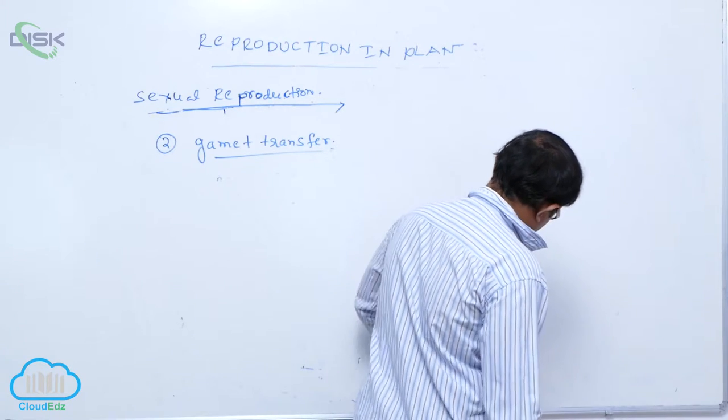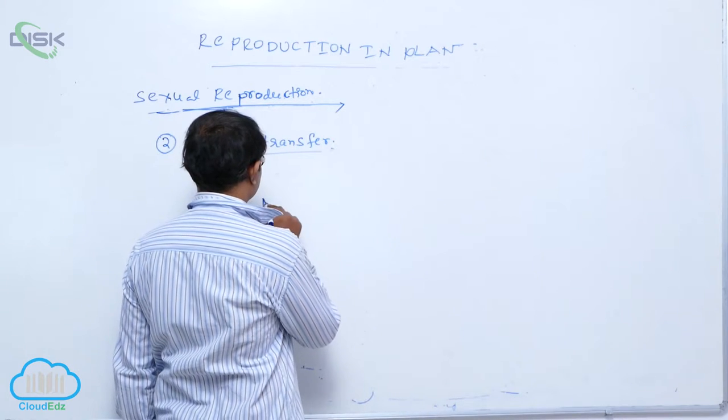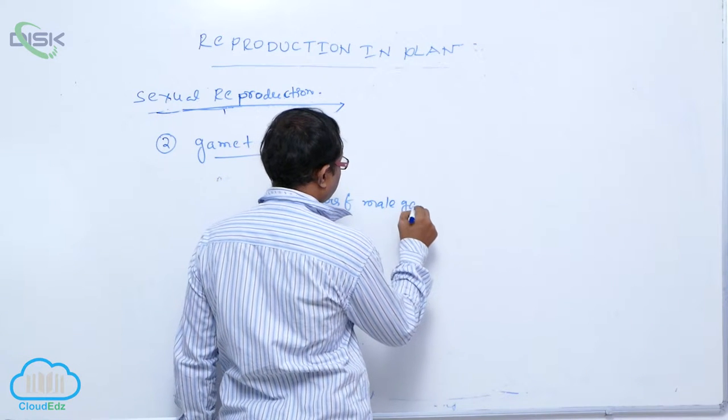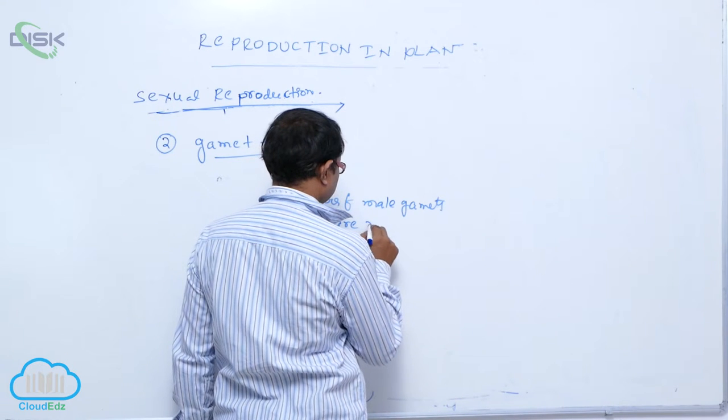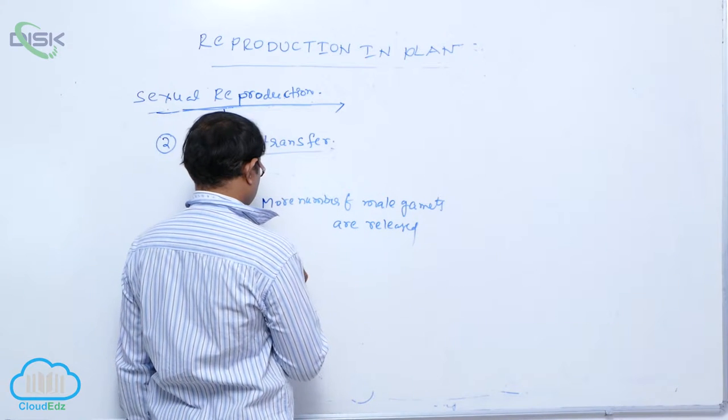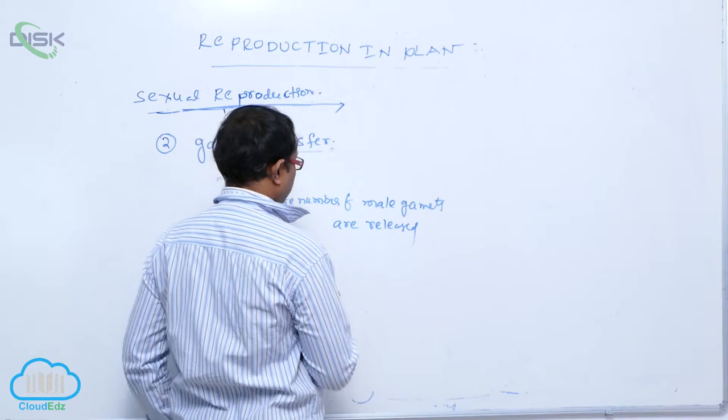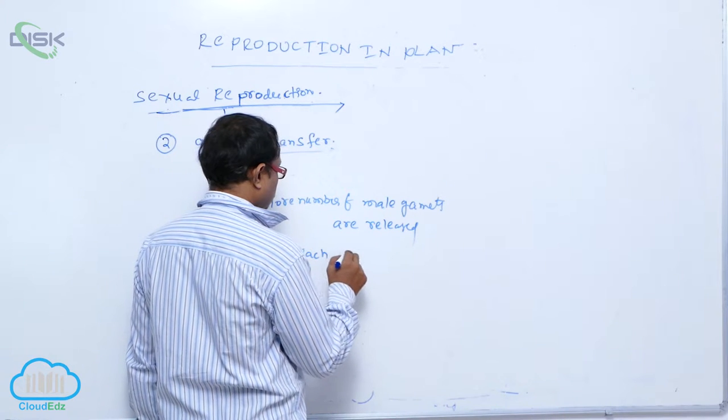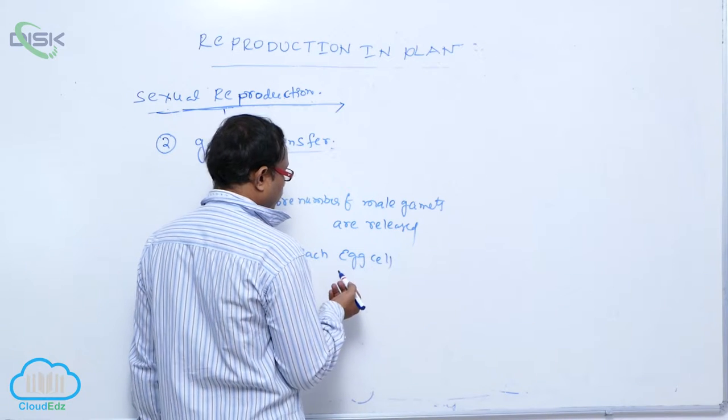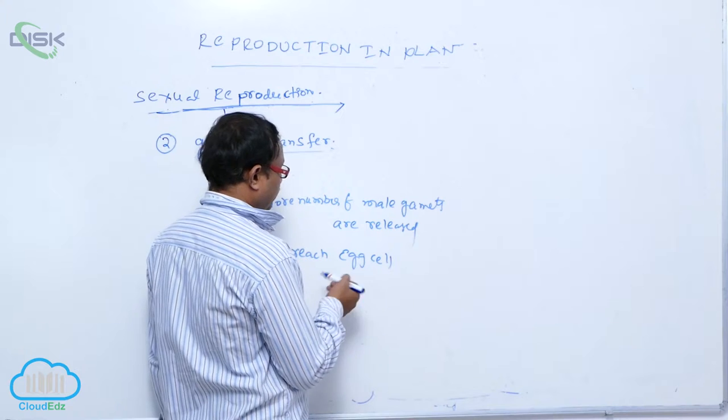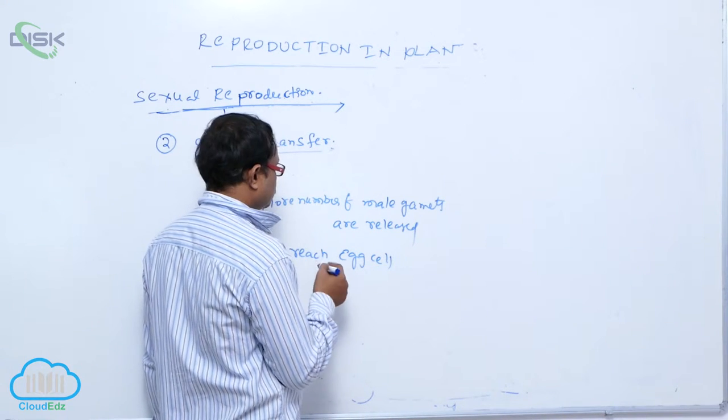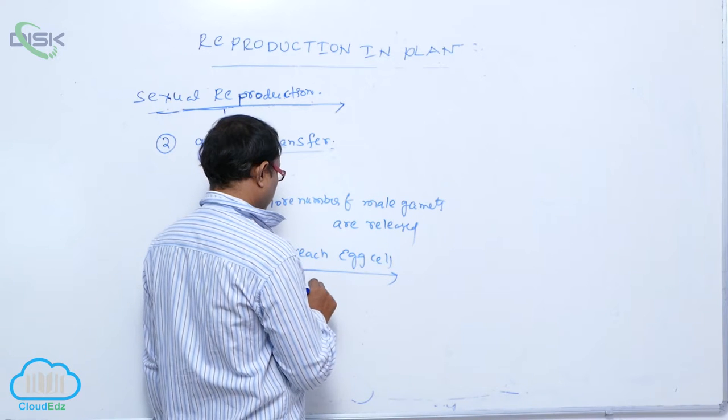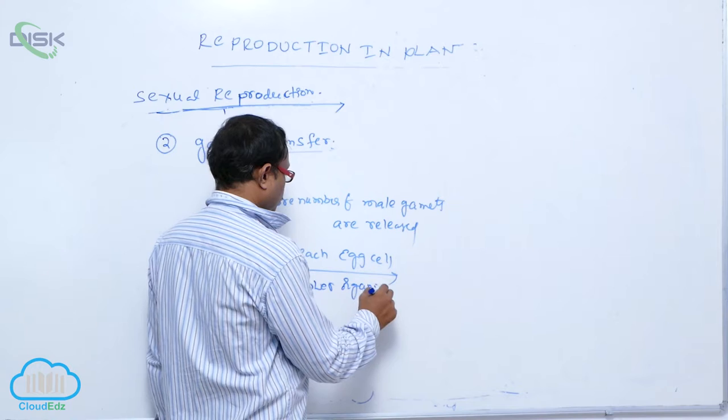In lower organisms, generally more number of male gametes are released. Female gametes are less in number. More number of male gametes are released to reach the egg. All male gametes do not reach that egg. To compensate for loss of the process, more number of male gametes are released.